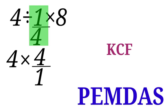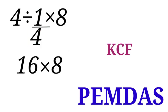So we now have 4 times 4 over 1 times 8. So 4 times 4 over 1 is 16. Then we now have 16 times 8. 16 times 8 is 128.